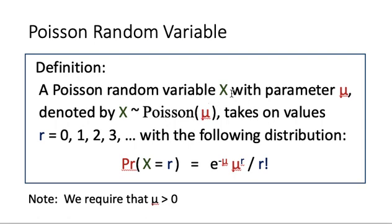The Poisson random variable takes on values r equal to 0, 1, 2, 3, and so on, such that the probability that x equals r is equal to e to the power minus mu, times mu to the power r, divided by r factorial. We require that parameter mu is greater than 0.